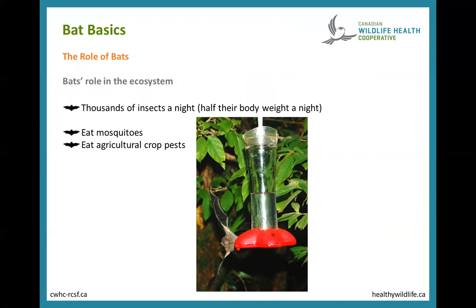Not only are bats keeping an ecological balance and keeping insect populations down for the ecosystem, but by doing that they are also protecting our crops. It means we don't lose nearly as many crops to pest insect species as we would without bats, and as a result we don't have to apply nearly as many artificial pesticides. This saves us literally billions of dollars a year.